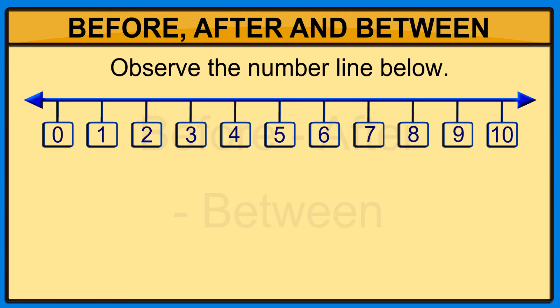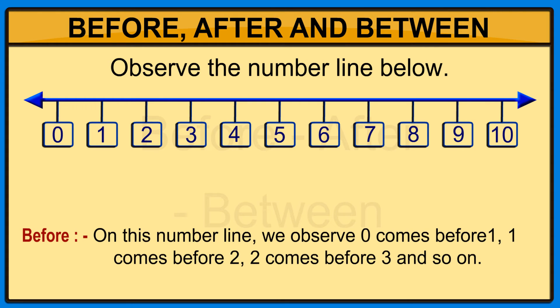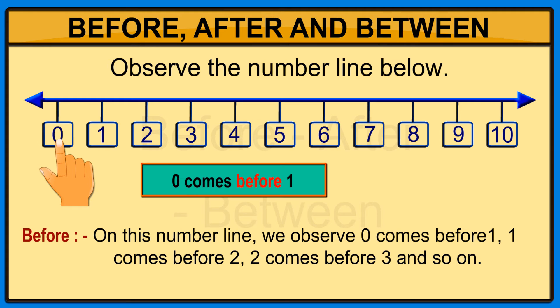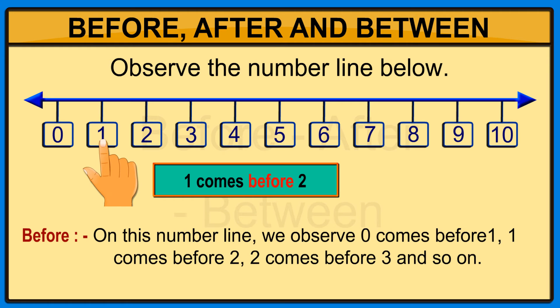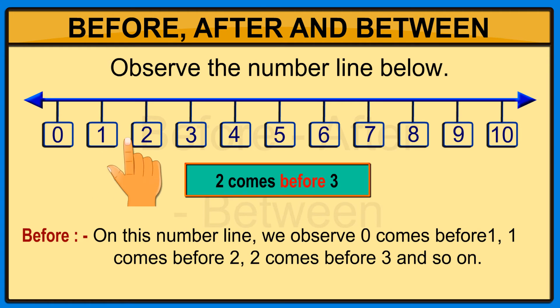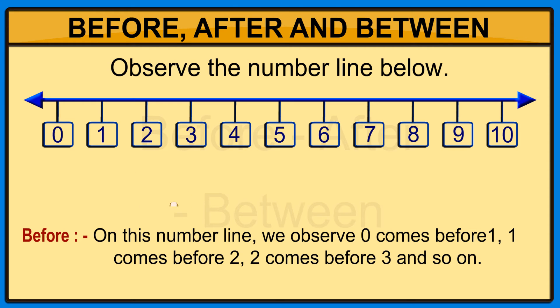The figure shown below represents the number line. Before: on this number line we observe zero comes before one, one comes before two, two comes before three, and so on.